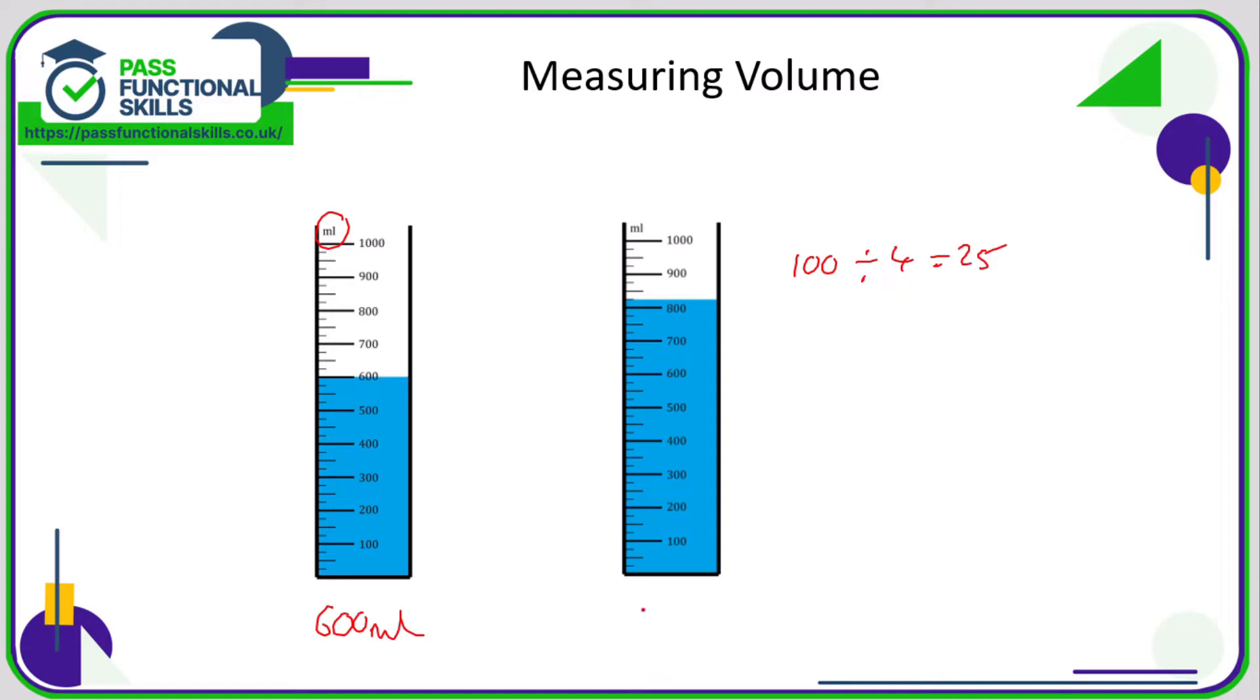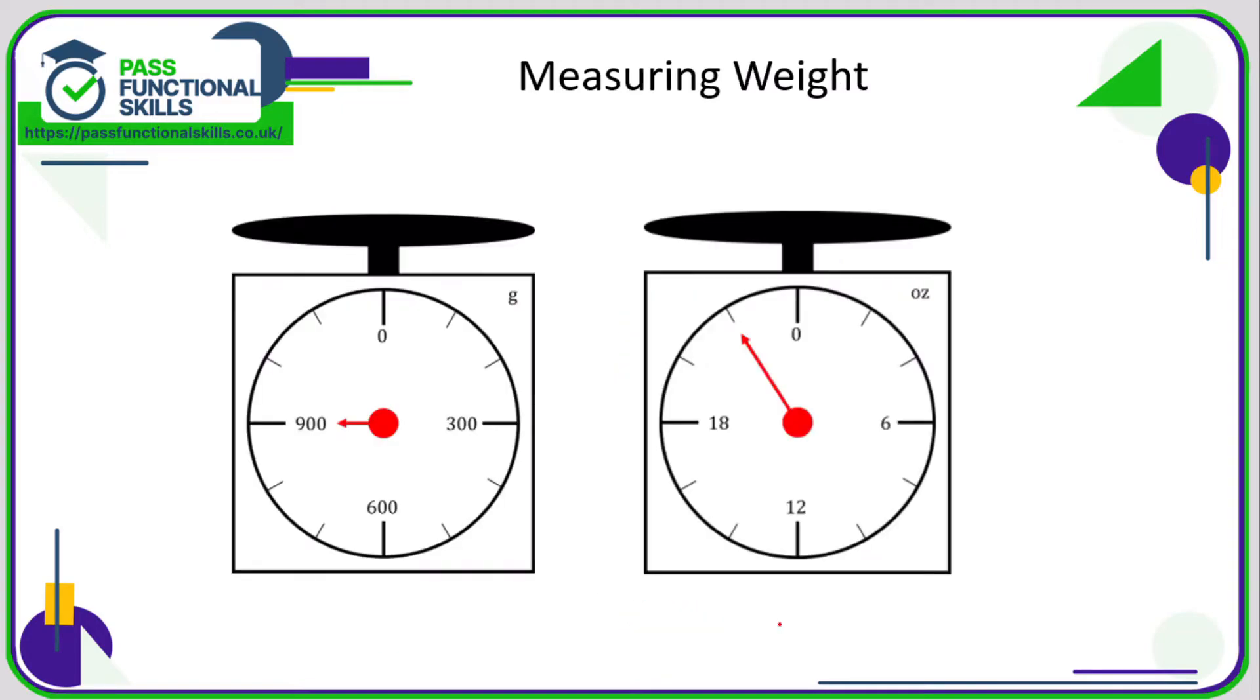For the weights, all we need to do is just see where the arrow lines up. On the left hand side, the arrow is bang on the 900, so that is a weight of 900 grams. On the right hand side, I think we can assume it's bang on this mark here. Again, we need to check the scale.